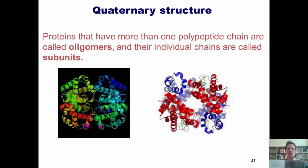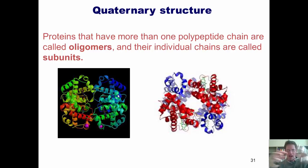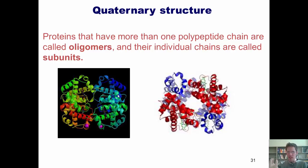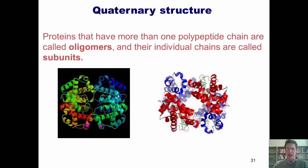I kind of like to think of quaternary structure as being like — when I was a kid I used to watch Transformers cartoons, and there was a character named Devastator who was made up of six different guys that all combined together to form one huge robot. Each of those individual guys was an individual by himself, but when they got together they formed a huge robot. Quaternary structure is kind of like that — there are sort of individual proteins that don't fully function until they get together and form one huge protein like hemoglobin.